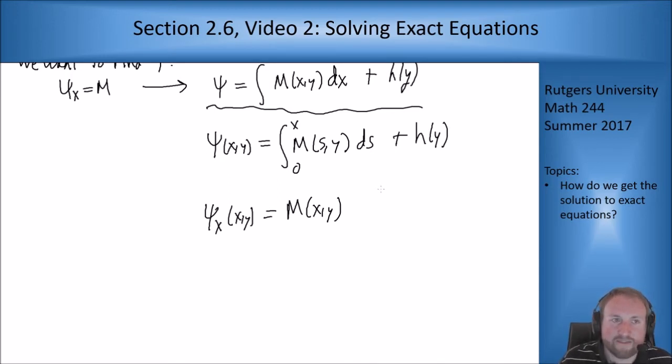Now we want to also have that ψ_y = N. Now for convenience sake, I'm going to call this function here q(x,y). So the expression looks a little neater, I'm just going to call that q(x,y). When you solve these equations, you would actually be calculating that explicitly. You would be given M, you would take an integral, and you would see what you get. So you would have this function q(x,y).